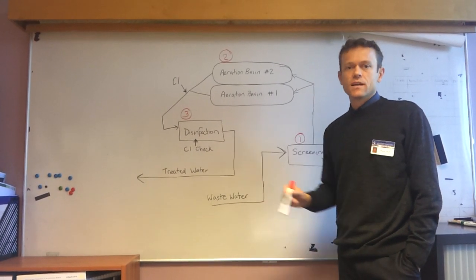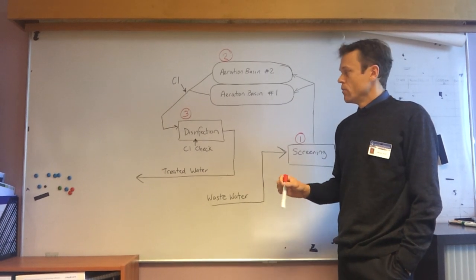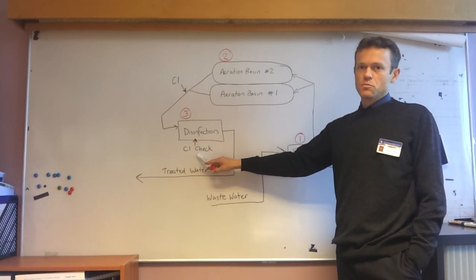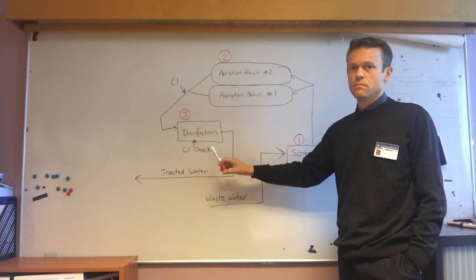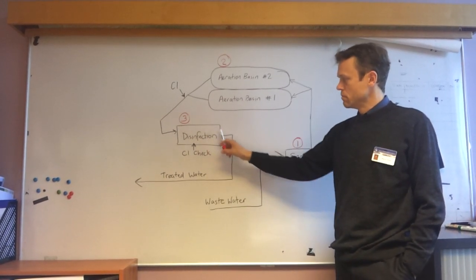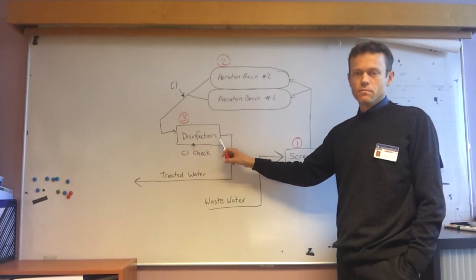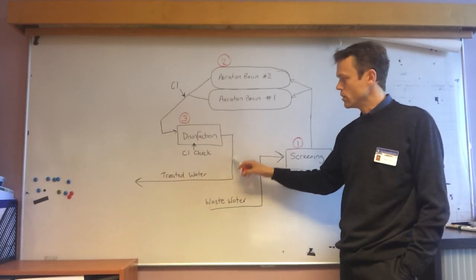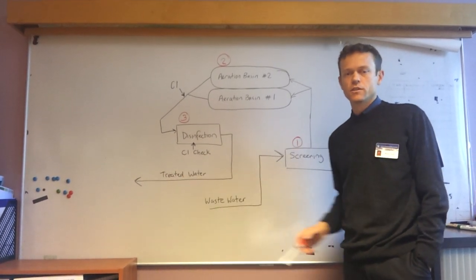If the chlorine residual is unacceptably low, we will then dose additional chlorine at this point to raise the chlorine up to an acceptable level. That will then do its disinfection in the remainder of the chlorine contact tank before the treated water is discharged to the sea.